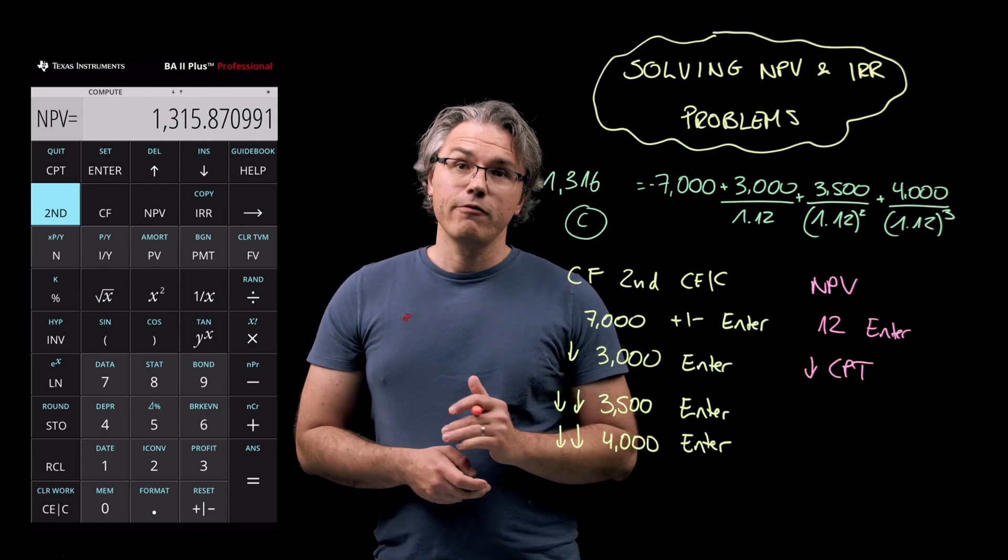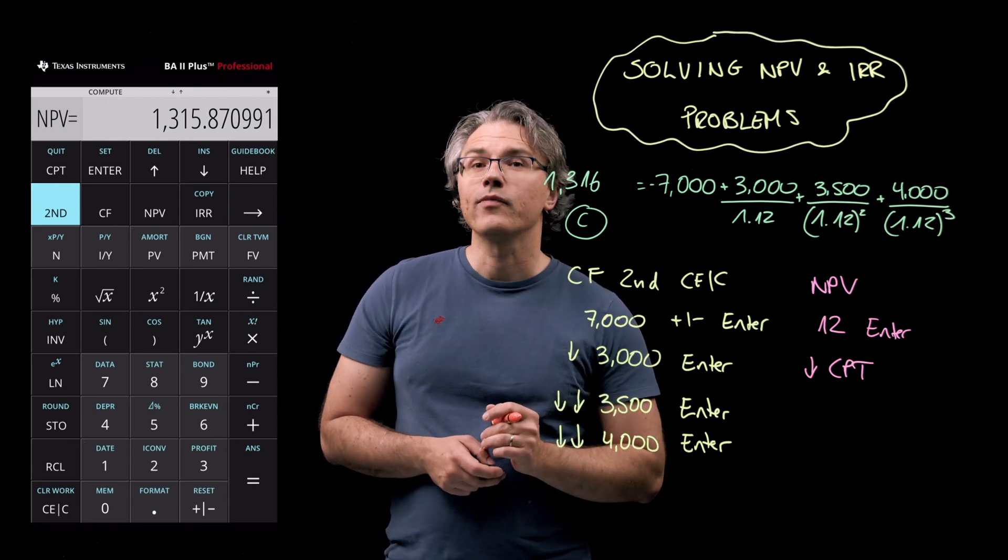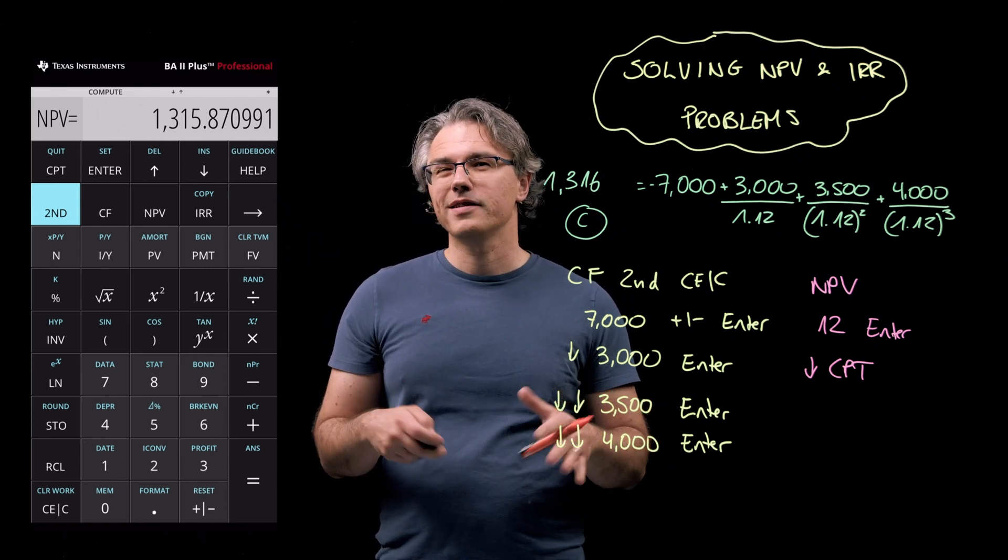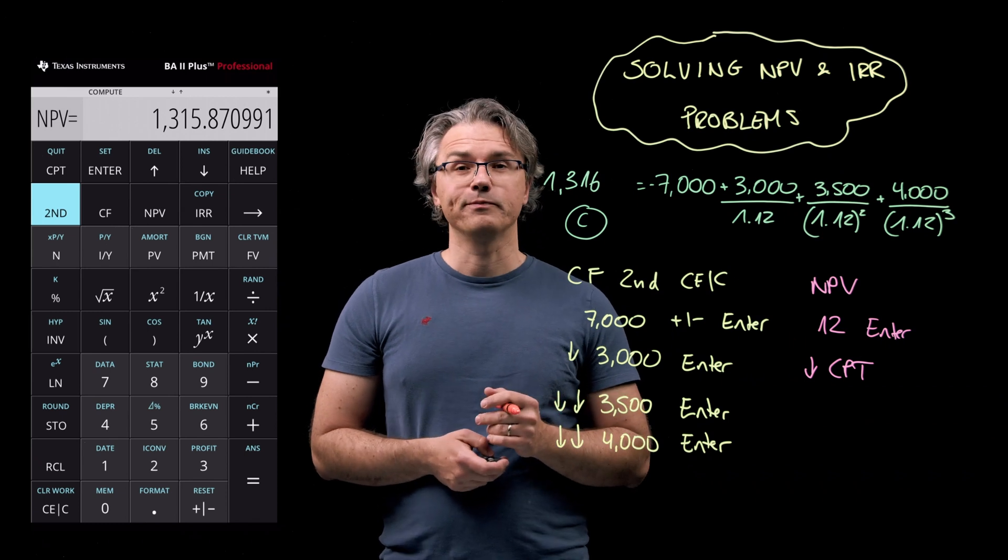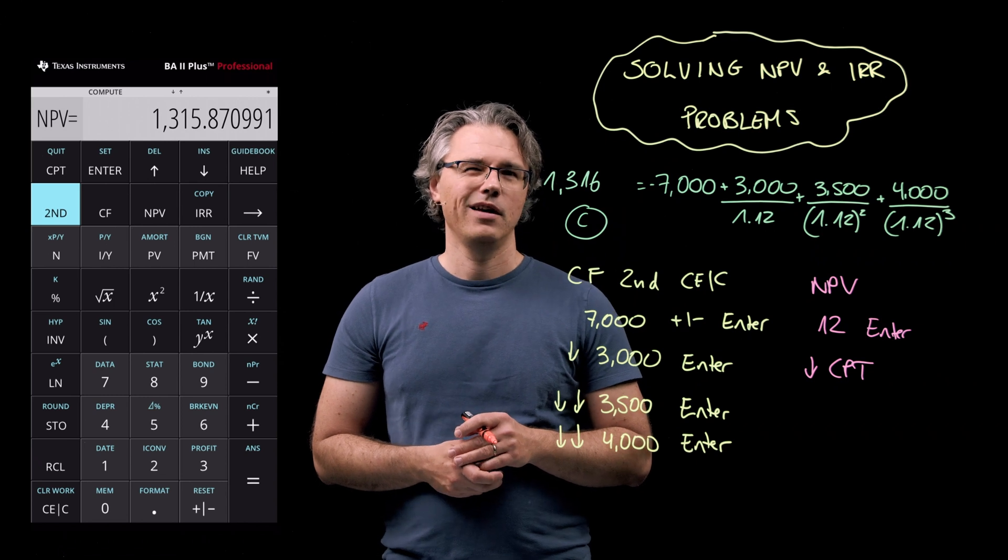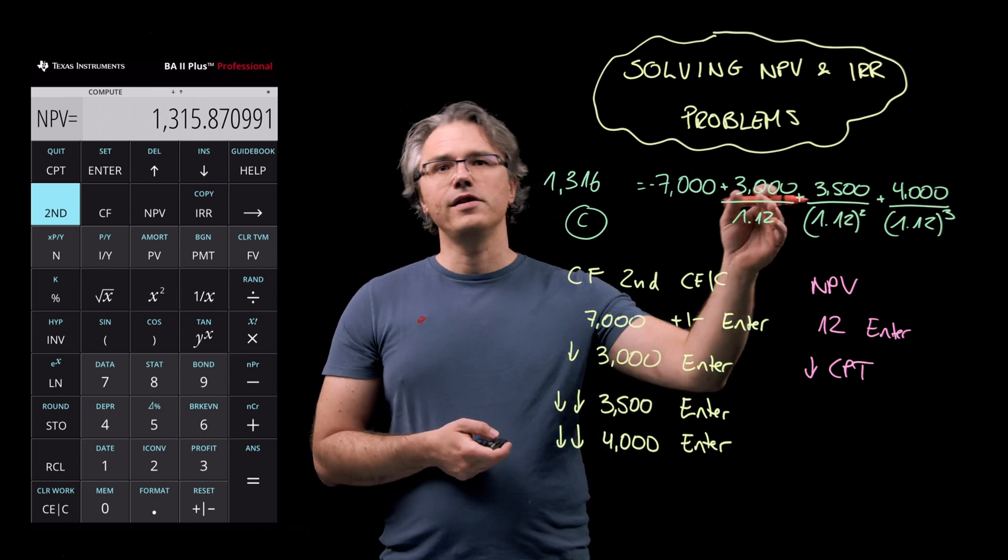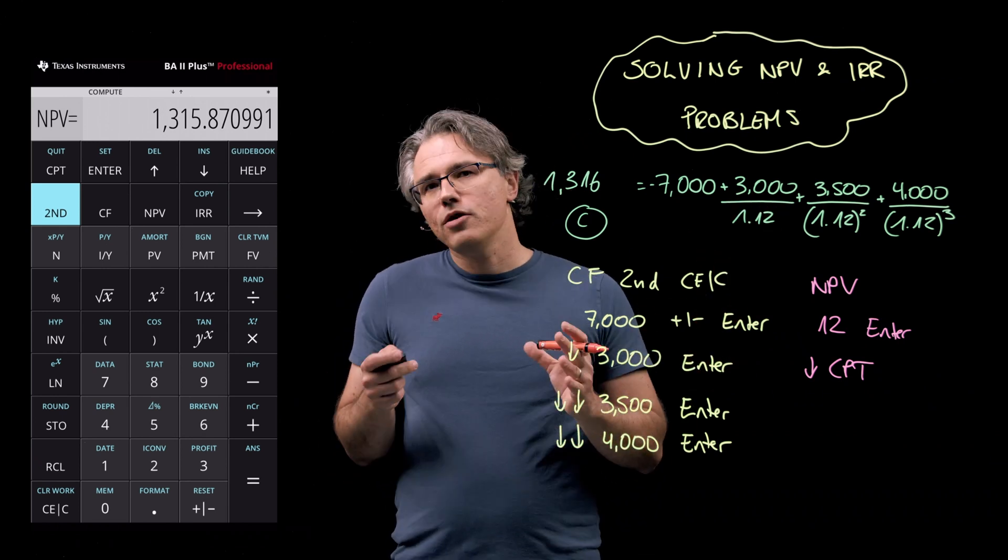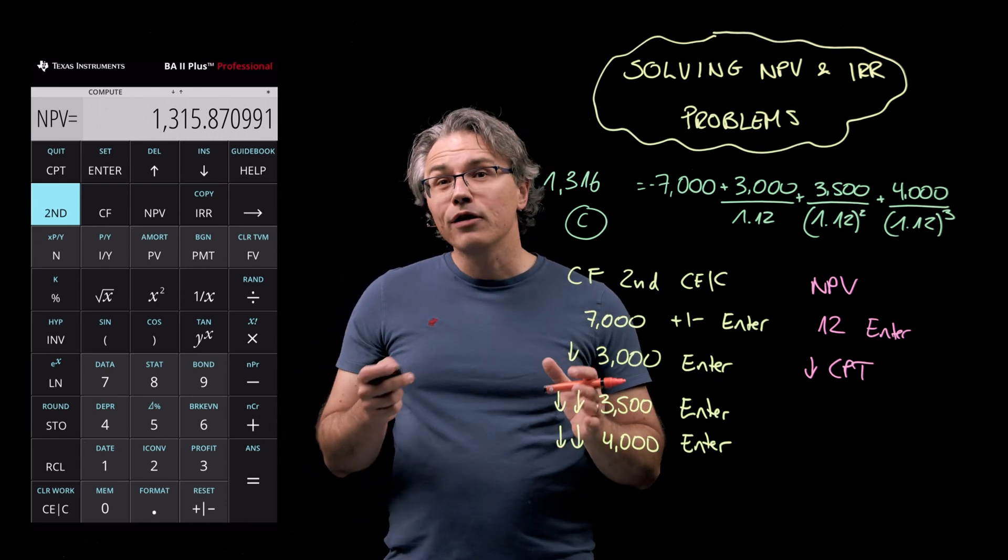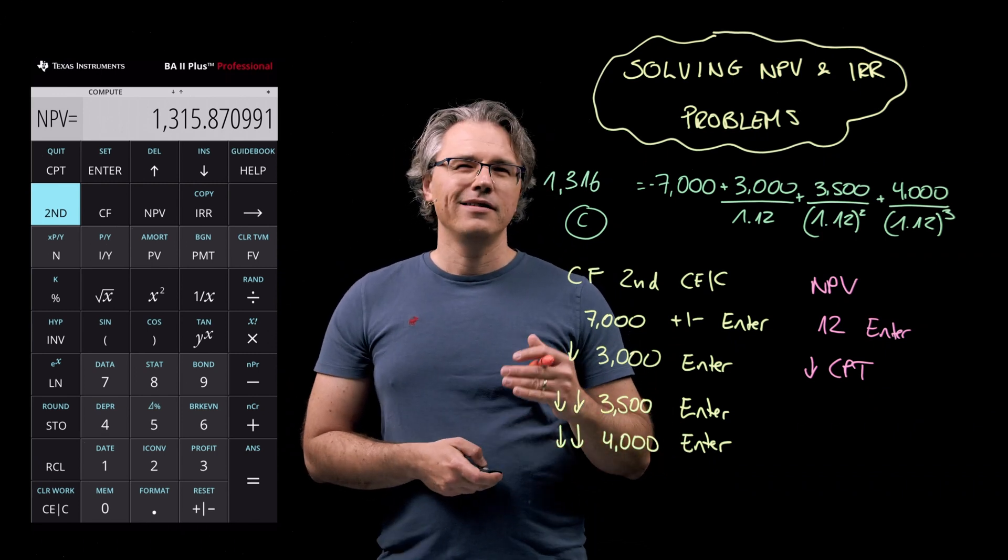The question also asks for the internal rate of return or IRR. And you probably know that this is the discount rate which makes the project NPV equal zero. So far, we only know that it is not 12%. When we used 12% to perform the discounting of these cash flows just a moment ago, we got an NPV which was positive. This is implying that the IRR we are looking for is higher than 12%.